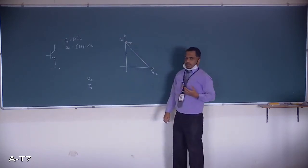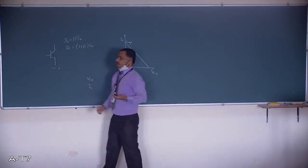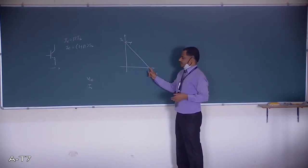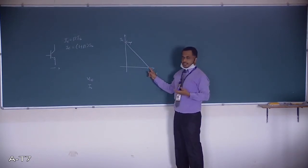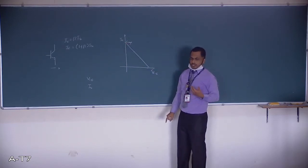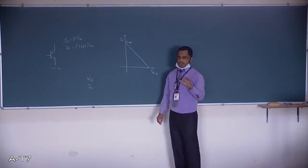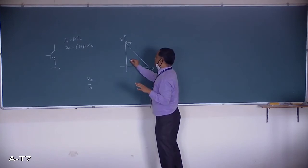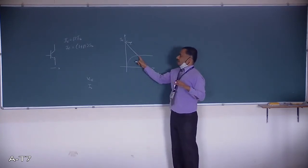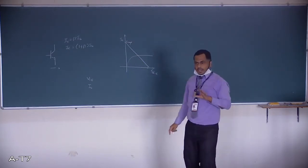Joining the saturation point and the cutoff point gives us the DC load line. The base current, which is a control parameter, decides the operating point on this line. For amplification, we select a base current such that it crosses the DC load line at the center, confirming the device is working in the active region.